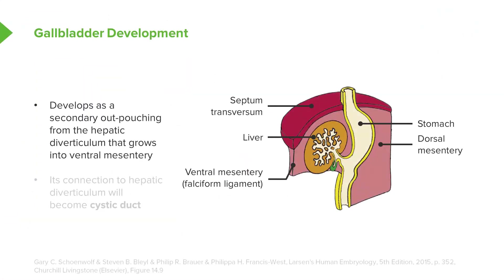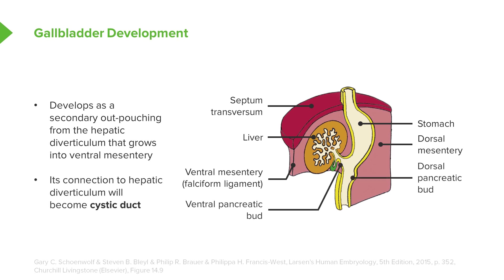Another bud develops off of the hepatic diverticulum. The gallbladder develops as an outpouching of the common bile duct and is located on the inferior surface of the liver, much like its location in the mature adult on the underside of the liver. The connection of the gallbladder to the common bile duct will become the cystic duct. At this point, the connections between the liver, gallbladder, and duodenum are already established.